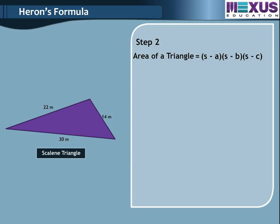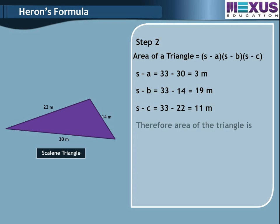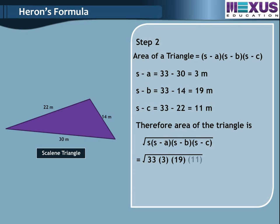Step 2: Calculate S minus A equals 33 minus 30 equals 3 m. S minus B equals 33 minus 14 equals 19 m. S minus C equals 33 minus 22 equals 11 m. Therefore, area of the triangle equals square root of 33 multiplied by 3 multiplied by 19 multiplied by 11, equal to square root of 20,691.